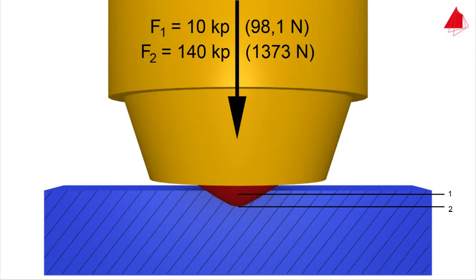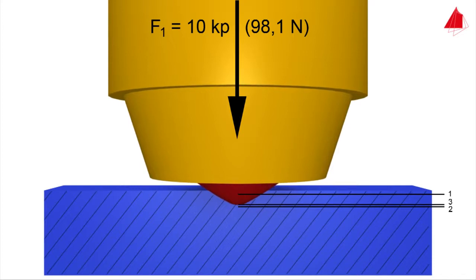In step 3, the major force is removed again while the minor force is still acting. The permanent increase in depth of indentation E is measured.